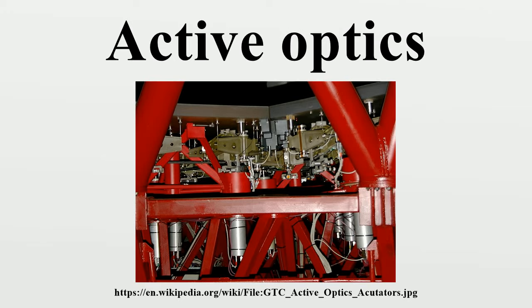Historically, primary mirrors were quite thick in order to maintain the correct surface figure in spite of forces tending to deform it, like wind and the mirror's own weight. This limited their maximum diameter to 5 or 6 meters, such as Palomar Observatory's Hale Telescope. A new generation of telescopes built since the 1980s use thin, lighter-weight mirrors instead.